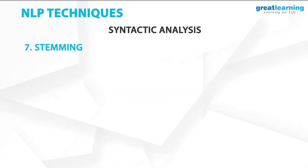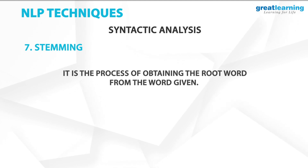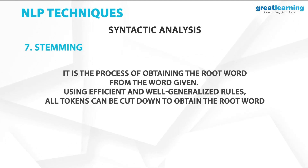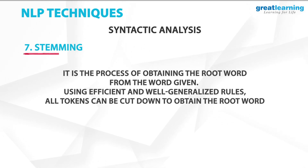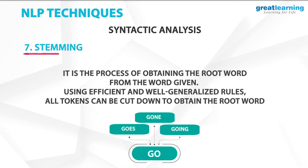The seventh technique is stemming. Stemming is the process of obtaining the root word from a given word. Using efficient and well-generalized rules, all tokens can be cut down to obtain the root word, also known as the stem. For example, go will be the root word for going, goes, and gone, though stemming is not as efficient as lemmatization.